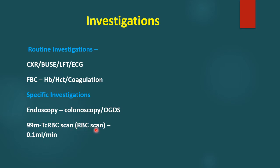The next specific investigation is the RBC scan — a radioisotope tagged RBC scan performed by withdrawing blood from the patient, tagging the red blood cells with technetium-99 radioisotope, re-infusing this treated blood, and following up with radioisotope scans over the abdomen. The patient must be bleeding at a rate of at least 0.4 mls per minute for the test to be positive.